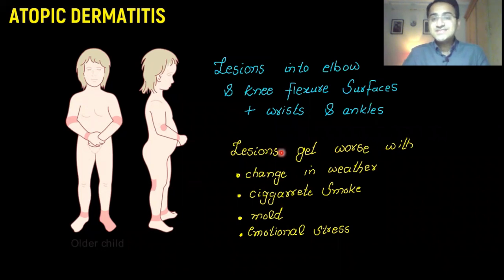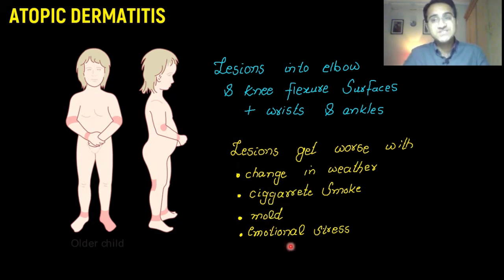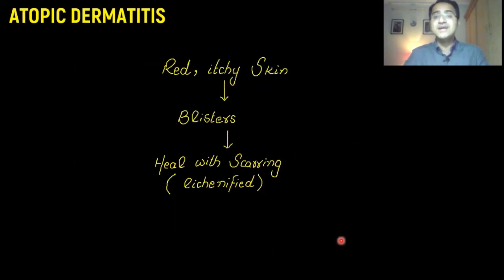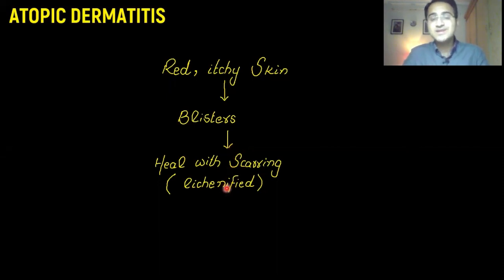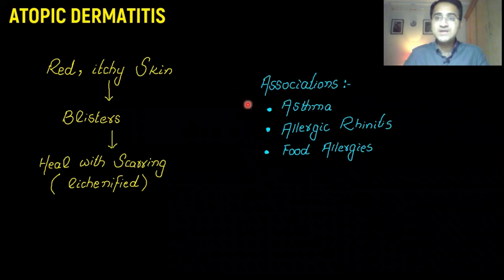Lesions get worse with change in weather, cigarette smoke, mold, or emotional stress — these are the exacerbating factors for atopic dermatitis. It usually starts as red itchy skin that becomes a blister, which ruptures and heals with scarring. That scarring is called lichenification — a leather-like appearance to the skin.